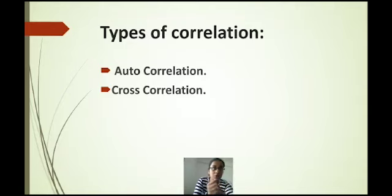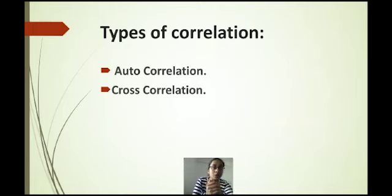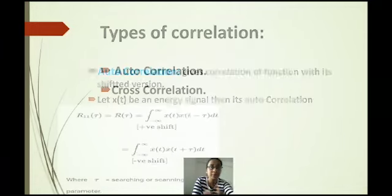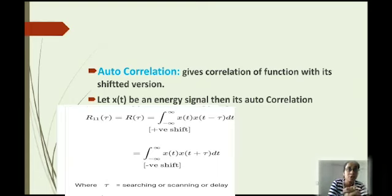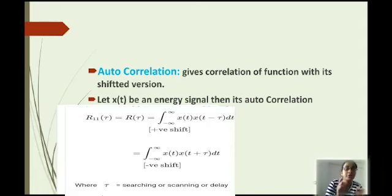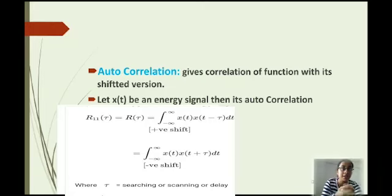There are two types of correlation: one is autocorrelation and the second is cross correlation. The question arises: what is meant by autocorrelation and what is meant by cross correlation? We will discuss them one by one. First, autocorrelation is the correlation of a function with its shifted version. In this case we use only one signal and its shifted version.